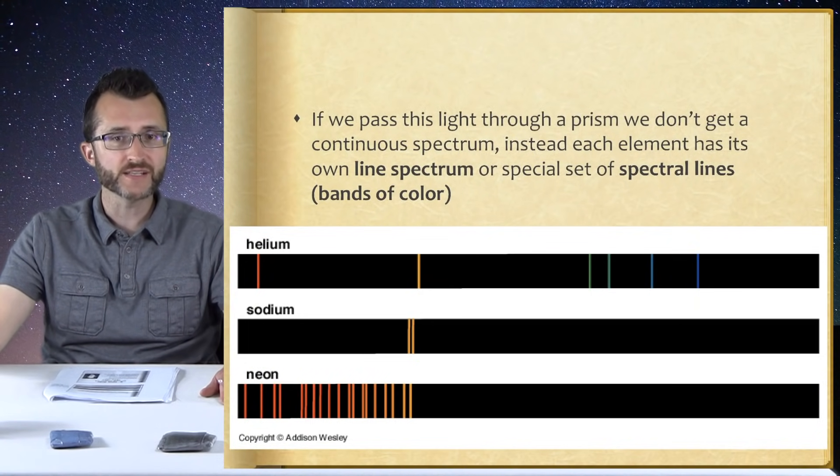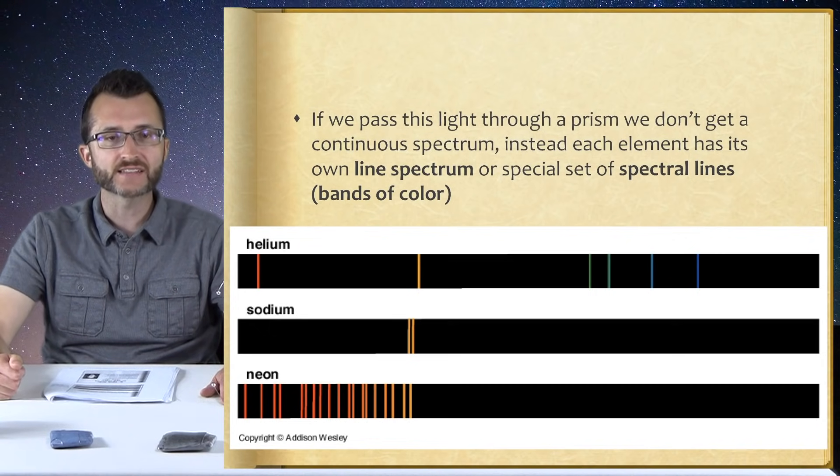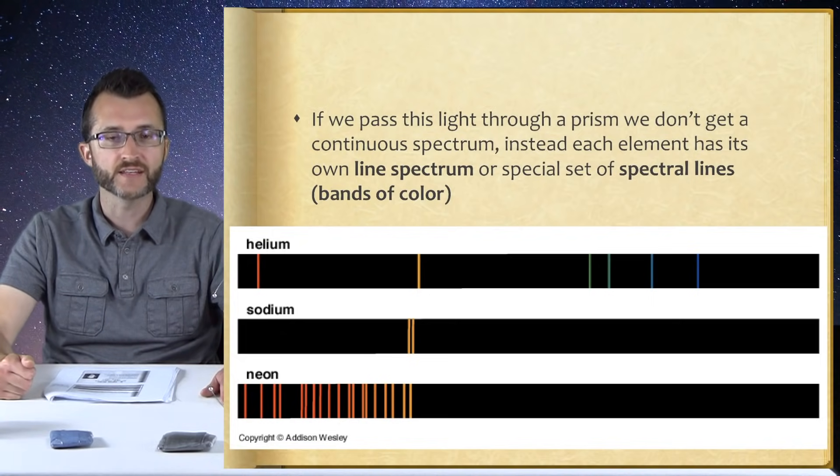If we pass this light through a prism, we don't get a continuous spectrum. Instead, each element has its own line spectrum or special set of spectral lines. Do you ever wonder how scientists know what a star that's billions of light years away is made of? We take the light from that star and we pass it through a prism and we analyze its spectrum. Since every element has its own distinct set of spectra, we match those lines up with the spectra we see from the stars and then we know what that star is made of.